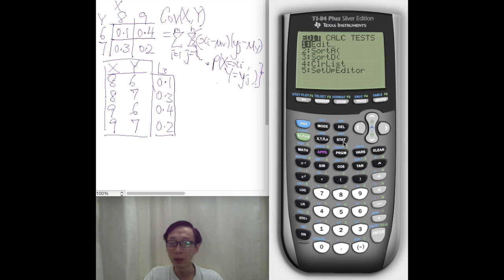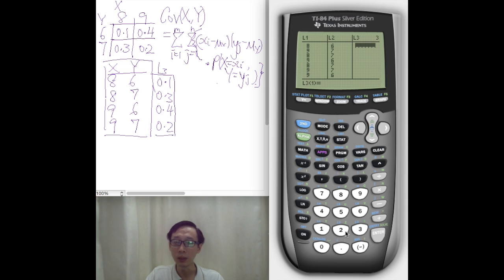We can now use L3 as our list of probabilities. So we can enter 0.1 and 0.3, 0.4, 0.2. And in our L4, we can enter X,